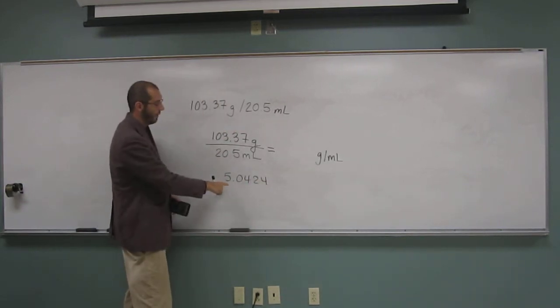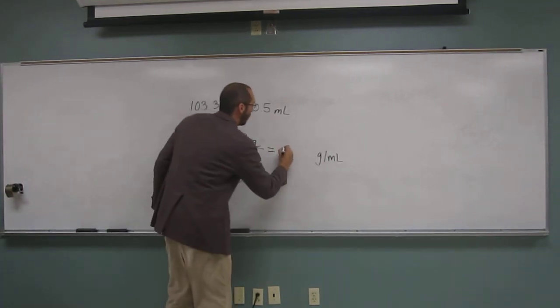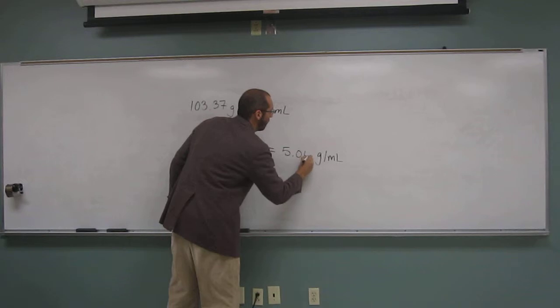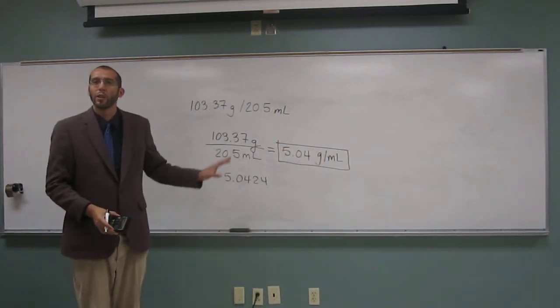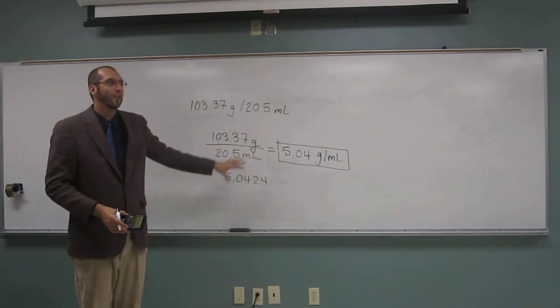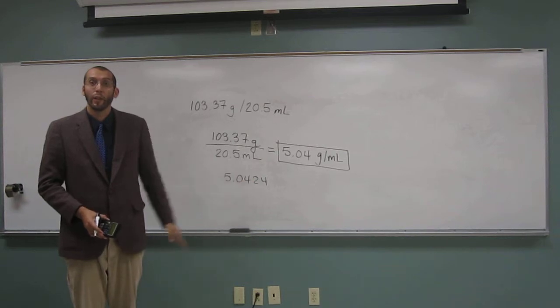So we're going to three sig figs, so what's my answer going to be? 5.04. So 5.04 grams per milliliter. And I like to box in my answer just to show my instructor that is definitely what my answer is.